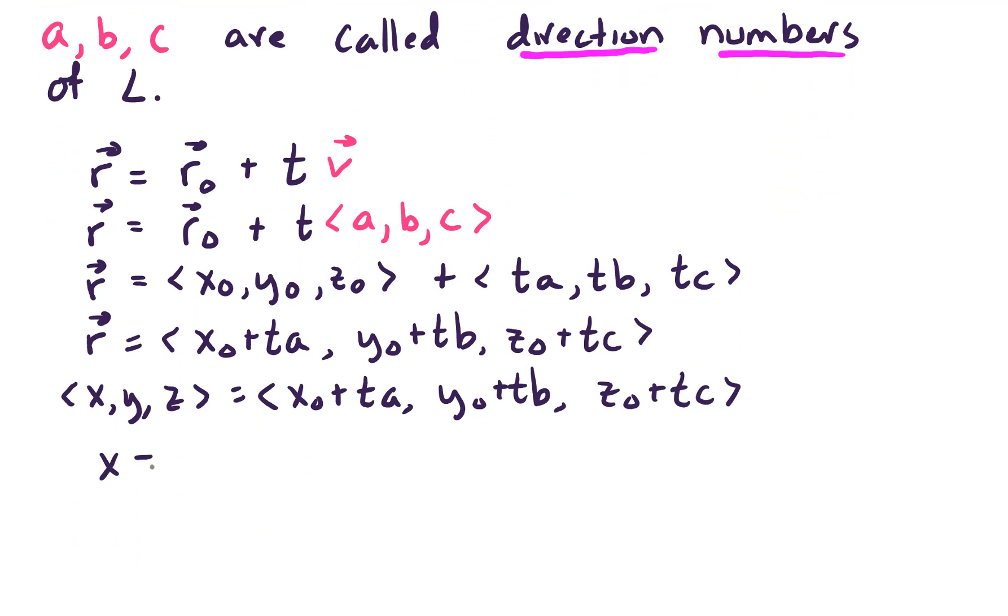So we could say X looks like X-naught plus TA for equating first components. Equating second components, we have Y equals Y-naught plus T times B. And the third components, we have Z equals Z-naught plus T times C. And these equations right here, this is what we refer to as parametric equations.